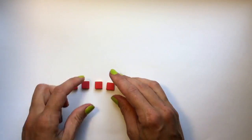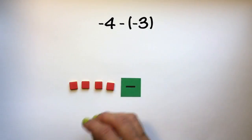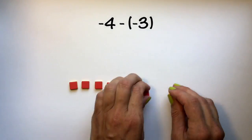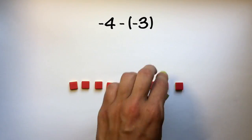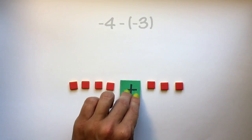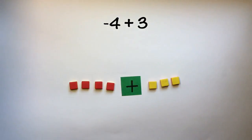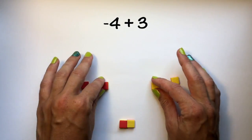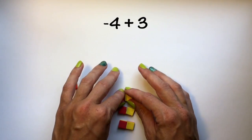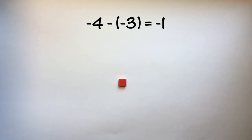Using the add the opposite method, we would have negative 4 minus negative 3. We would change this to be adding the opposite. Now that it's addition we can remove our addition sign, create zero pairs, remove them, and we have the answer of negative 1.